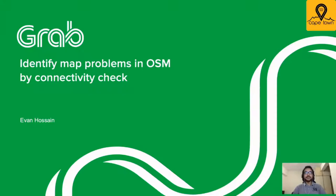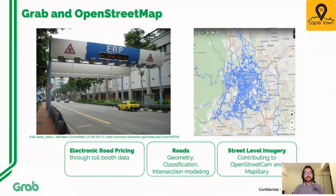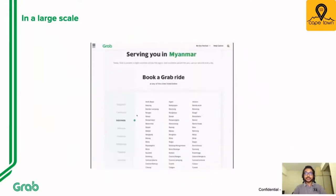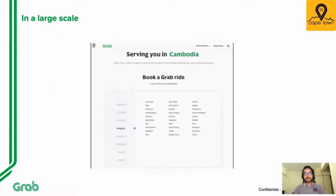I am Evan, currently working as a software engineer at Grab. Today I'm going to talk about how we identify map problems in OSM by connectivity check. Grab has been relying on OpenStreetMap for various things like improving ETA accuracy and calculating electronic road pricing. We are also enriching OSM and the community by adding and updating roads, collaborating with contributors like OpenStreetCam and Mapillary for street-level imagery, and organizing mapathon-like events — all at a large scale across Southeast Asia. In this process, sometimes we encounter certain problems and opportunities to improve OSM.